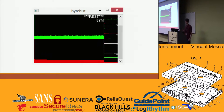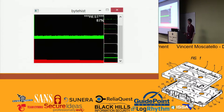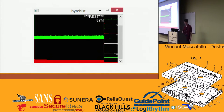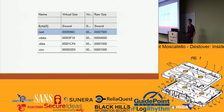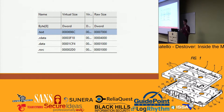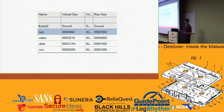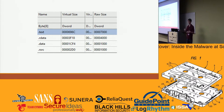This malware sample drops other executables and runs in components — it's kind of modular. Back in CFF Explorer, one thing you can do to tell if a malware sample is packed is if the virtual size of the executable is much larger than the raw size. The raw size is the actual size in the file, and the virtual size is the size in memory.